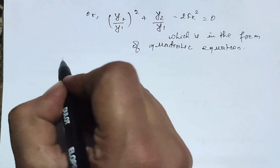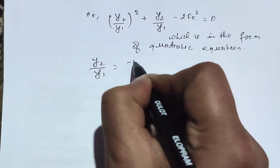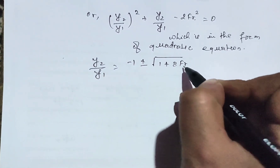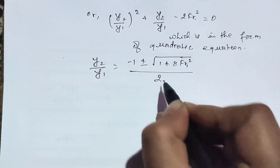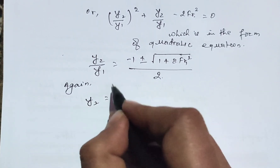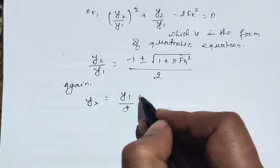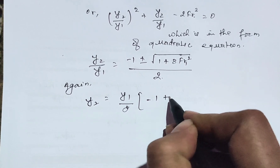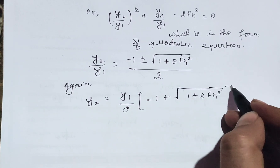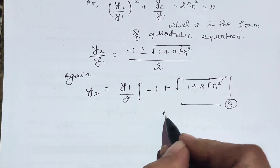On solving this quadratic equation: y2 divided by y1 equals minus 1 plus or minus the square root of (1 plus 8·FR1²), all divided by 2. Therefore, y2 equals y1 divided by 2 times (minus 1 plus square root of 1 plus 8·FR1²). This is equation 3 for the sequent depth y2.